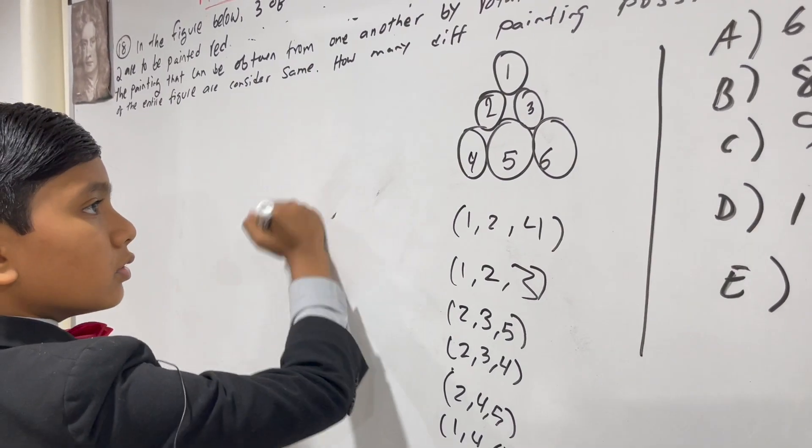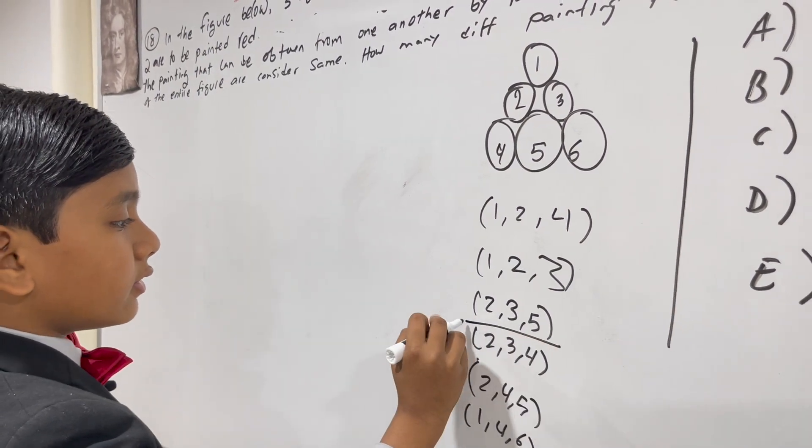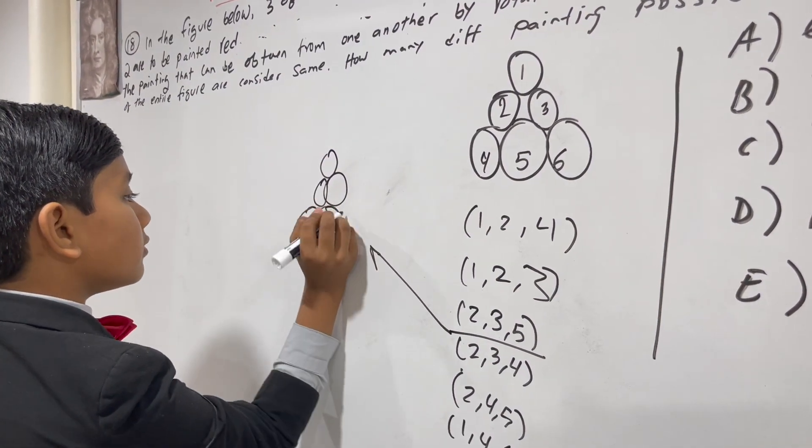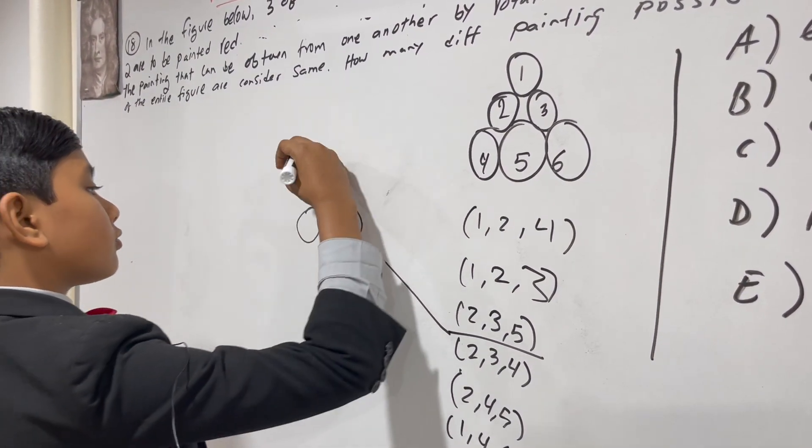So, for example, let's say we take 2, 3, 5. 2, 3, 5 says that we have 1, 2, 3.